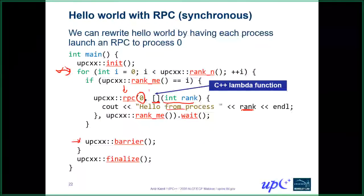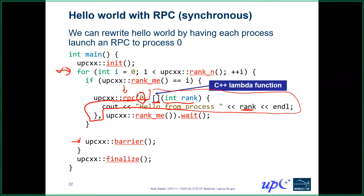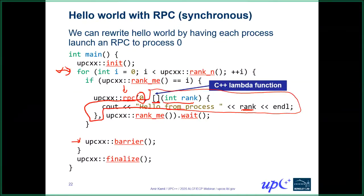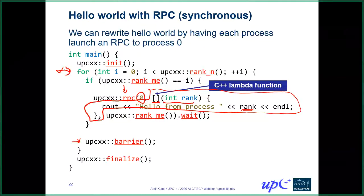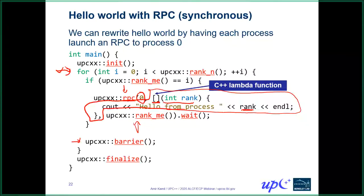The lambda function is the second argument of RPC — the function to be invoked on process zero. After the function argument, we have the arguments to that function. The arguments to RPC are: target process number, function to be invoked, and then the arguments to that function. Here we have a single int argument and we're passing rank_me() — the process number of the initiator.